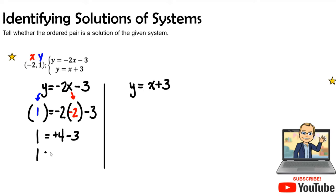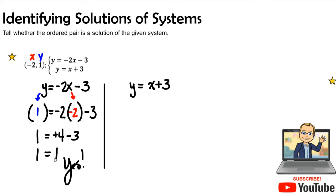1 equals 4 minus 3, which is 1. So the answer is yes — the point is on this linear function, since both sides of the equation are equal to each other.